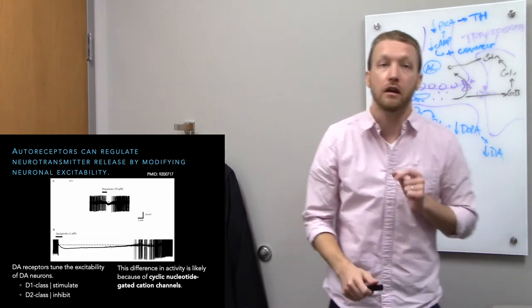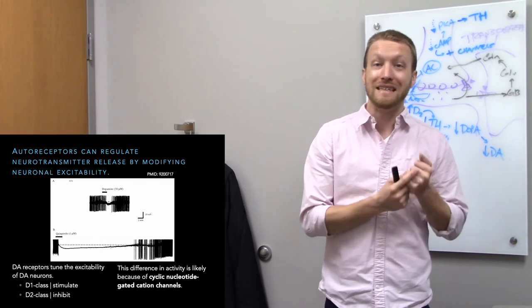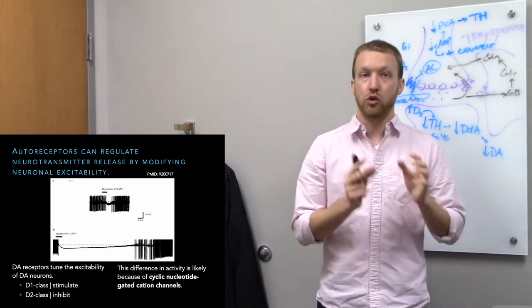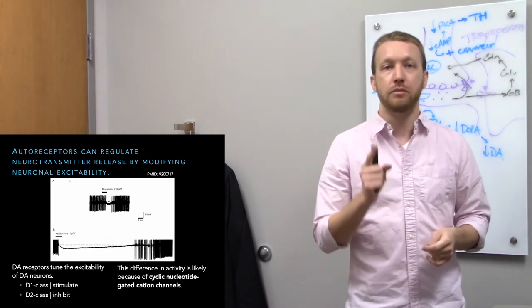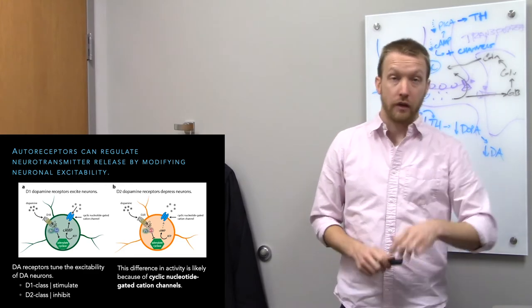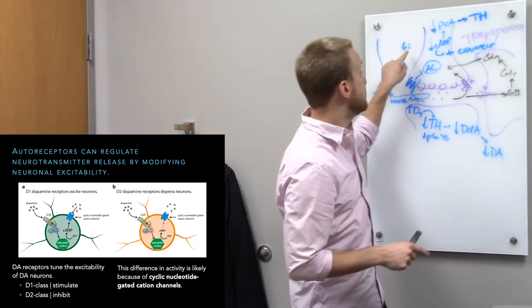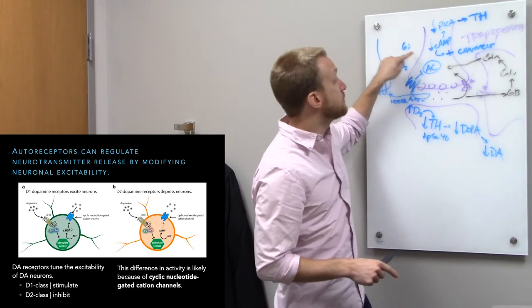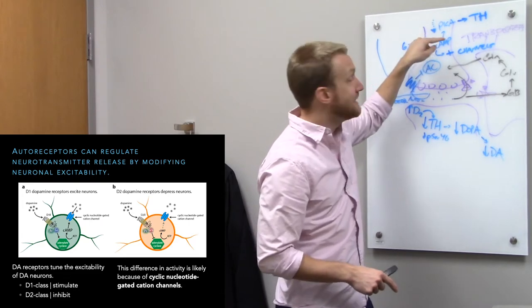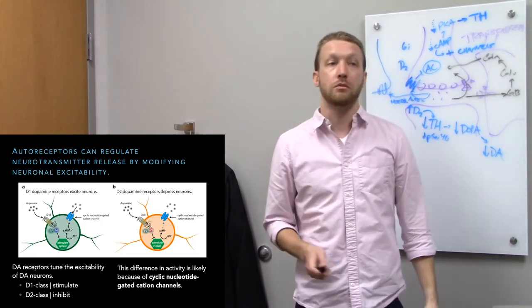Whether you apply straight-up dopamine or quinpirole, the D2 agonist, you see the same thing: a long-lived decrease in the excitability of those dopamine neurons. D2 is Gi-coupled, decreases the activity of adenylyl cyclase, decreases cyclic AMP levels, and decreases cation conductance, reducing the excitability of our dopamine neurons.